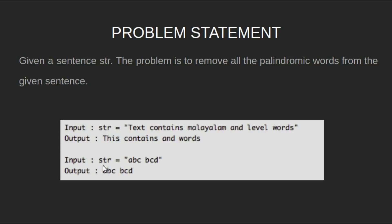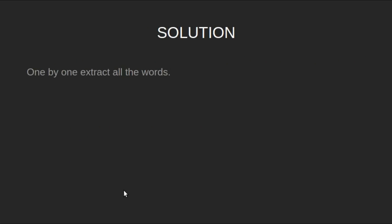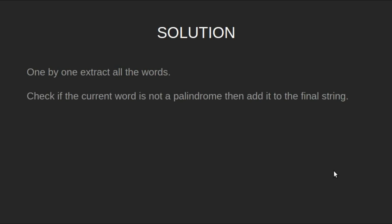For input string 'abcbcd', it contains no palindrome strings, so the output will be the same. Now let's look at the solution. One by one, extract all the words. Now check if the current word is not a palindrome, then add it to the final string.